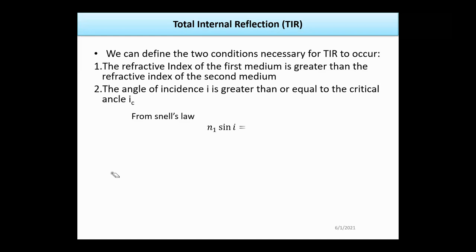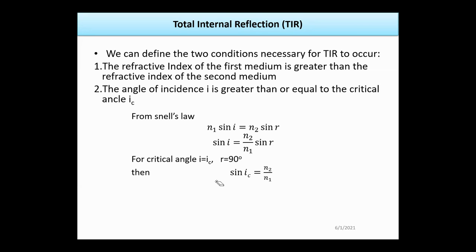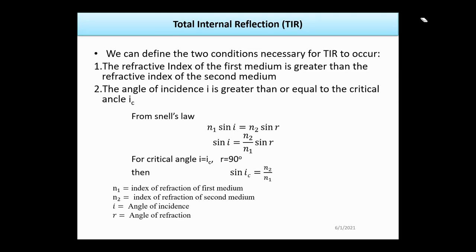Optical fiber works on Snell's law: n1 sin(i) = n2 sin(r), so sin(i) = (n2/n1) sin(r). When the incident angle equals the critical angle ic, the refracted angle r is 90 degrees, giving sin(ic) = n2/n1. Here, n1 is the refractive index of the first medium, n2 is the refractive index of the second medium, i is the angle of incidence, and r is the angle of refraction.